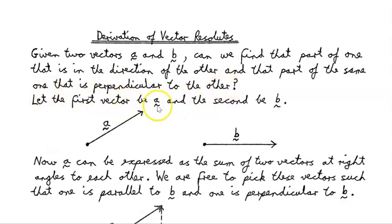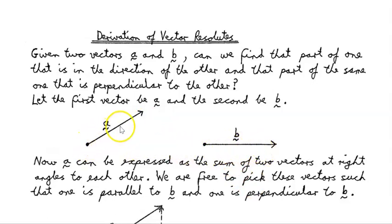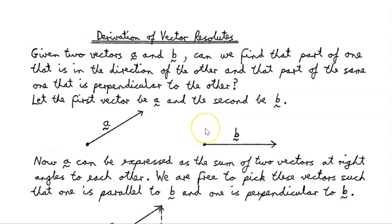Let the first vector be A and the second be B. We want to find that part of vector A that is in the direction of vector B, and that part of vector A that is perpendicular to vector B. Those are the two things we want to find, and that'll be the focus of this video. This is also called vector projection as well as vector resolutes.